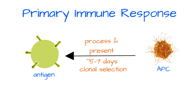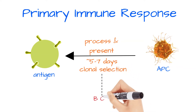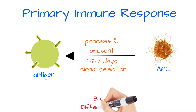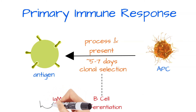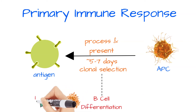It's during this process that B cell differentiation and proliferation take place. After those five to seven days go by, IgM antibody can be detected in the circulation. The B cells initially just produce IgM but then perform class switching to IgG.